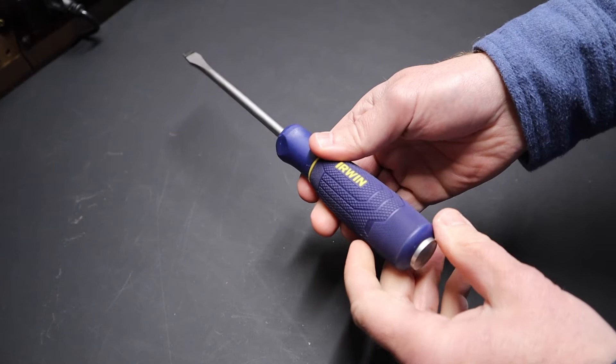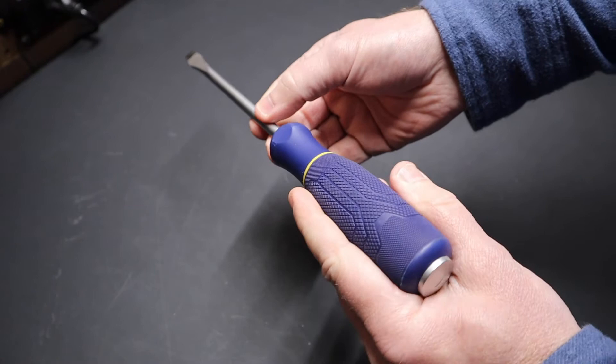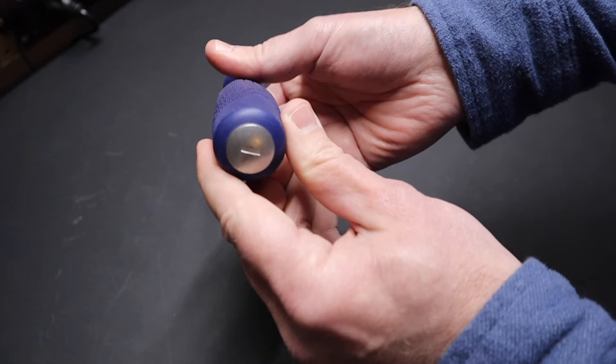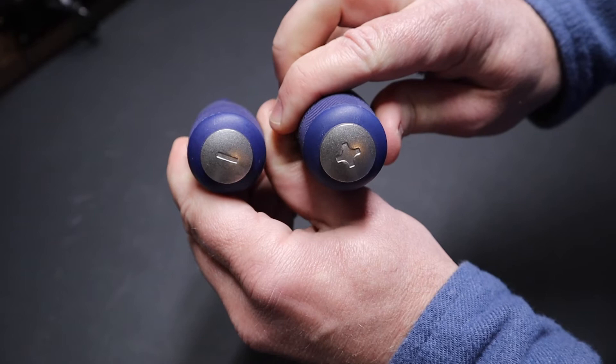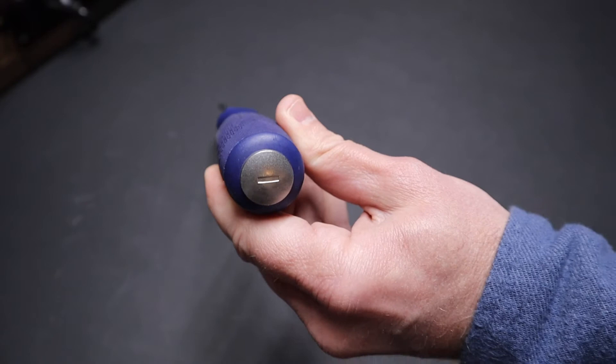The criteria I had—the reason I picked this screwdriver—was because of course you want the shank to come all the way through, but I also wanted the designation of whether the screwdriver was flat or Phillips to be on the handle of the screwdriver. And here you can see it's on both.